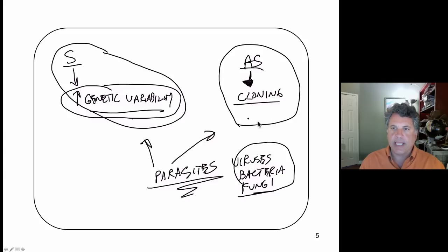When you have an asexual species or an asexually reproducing population, there is little genetic variability and therefore the parasites can home in on a particular arrangement of genes, a particular molecular signature, if you will, of the asexually reproducing populations.